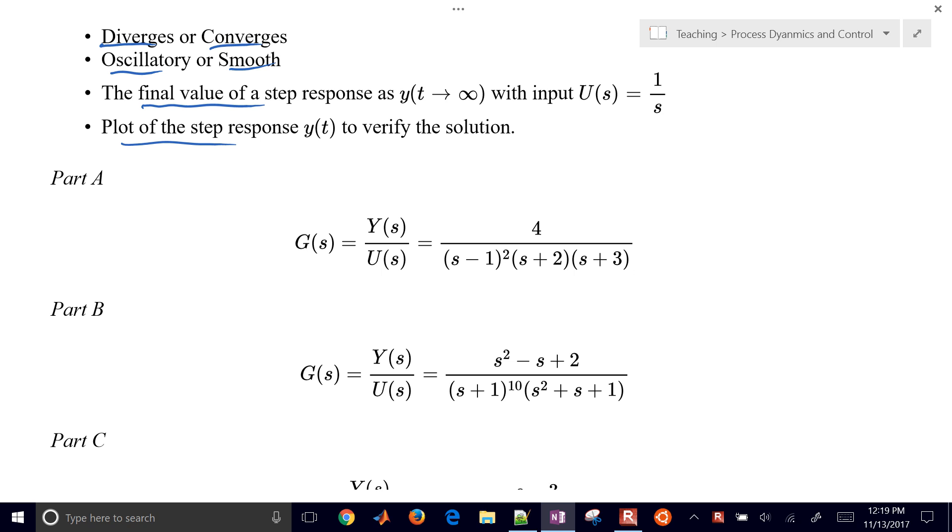We know if it's going to be stable or unstable. If any of the real parts, looking at the real parts, if any of them are positive, then it's going to be unstable. If all of them have negative real parts, then it's going to be stable. So let's look at the roots of the denominator.